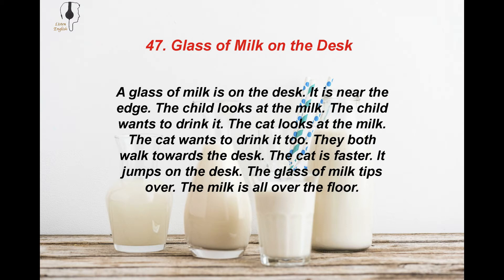A glass of milk is on the desk. It is near the edge. The child looks at the milk. The cat looks at the milk. The cat wants to drink it too. They both walk towards the desk. The cat is faster. It jumps on the desk. The glass of milk tips over. The milk is all over the floor.